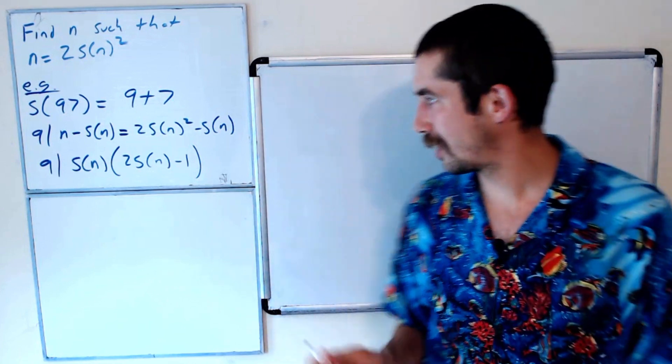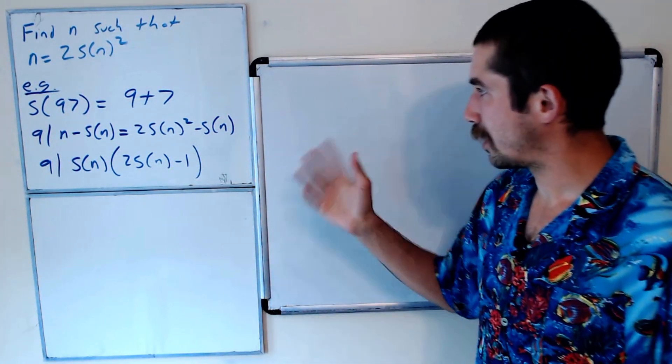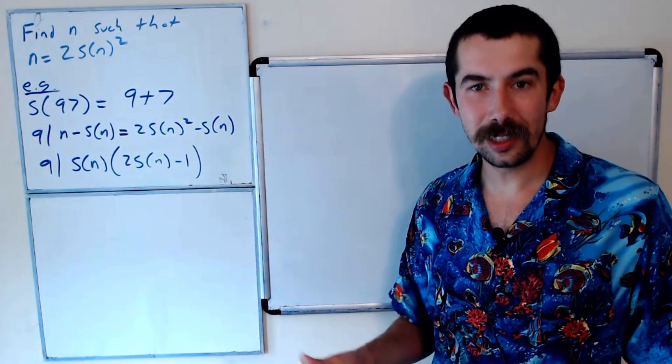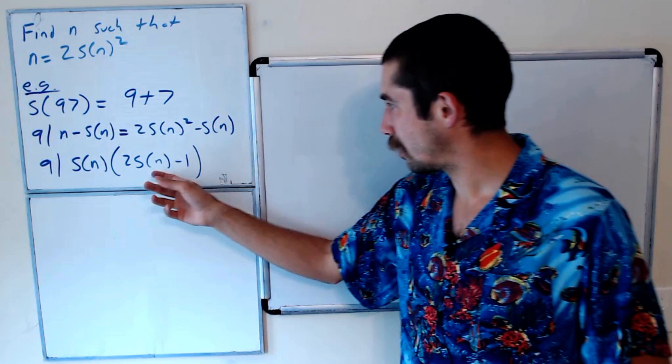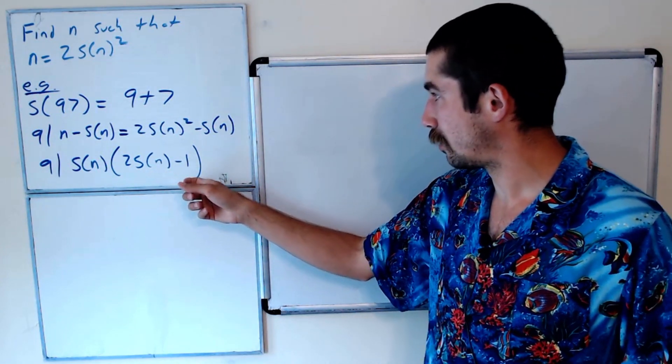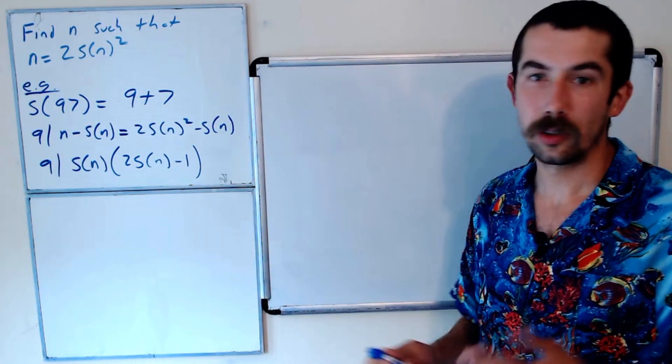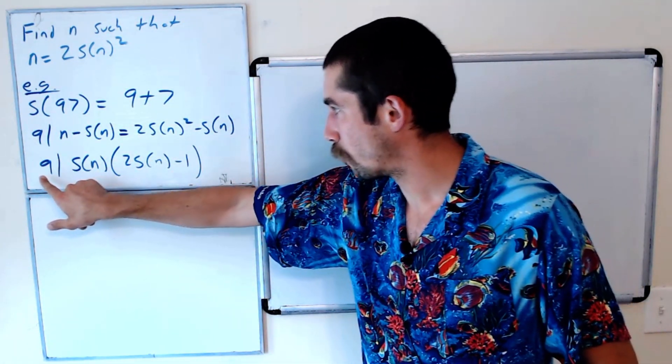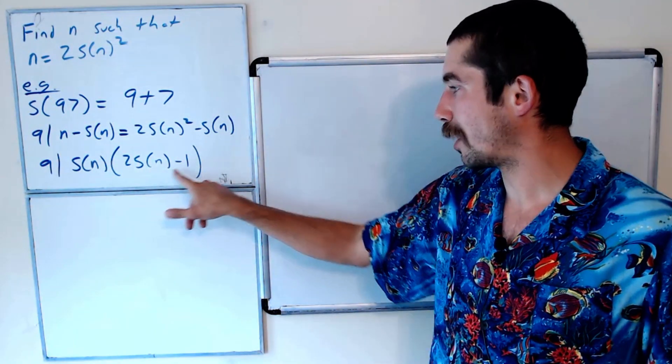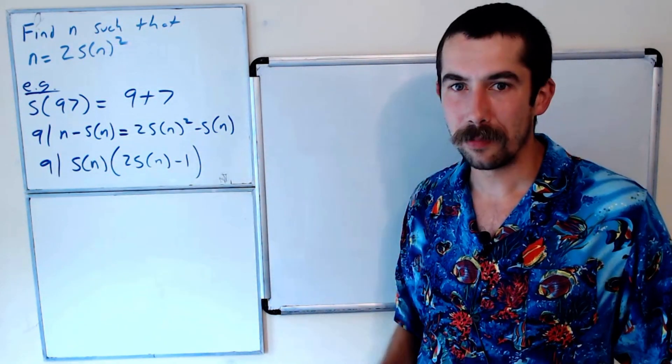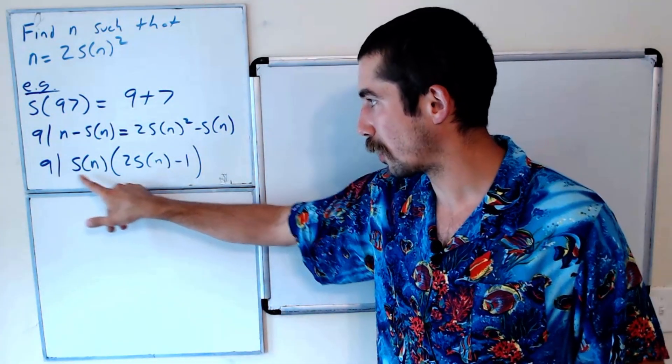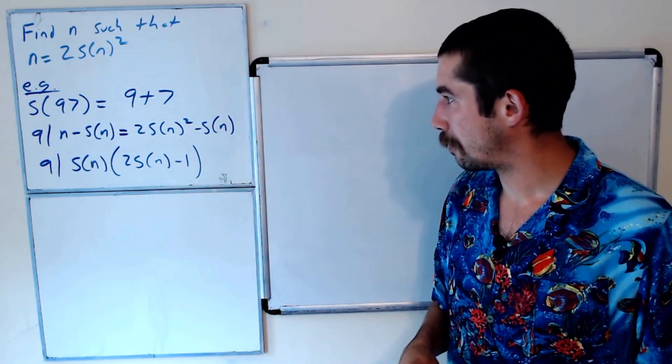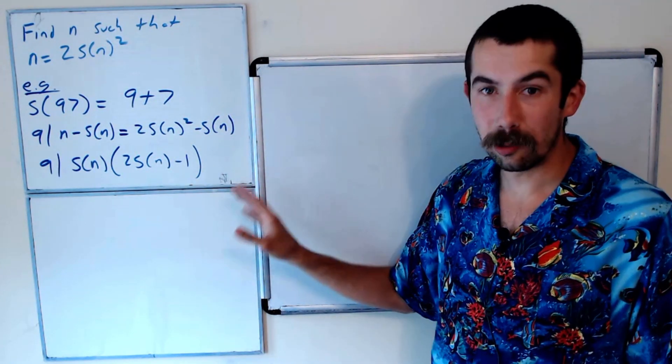Make sure you believe that. And what else? Well, these two factors are relatively prime. Their greatest common factor is 1. So what's the point? That means that 9 either divides S(n) or 9 divides 2S(n) - 1. If these weren't relatively prime, it's possible that 3 goes into one of them and 3 goes into the other, but we don't have to worry about that case because they're relatively prime. So we'll deal with that eventually.